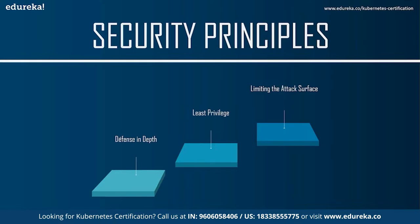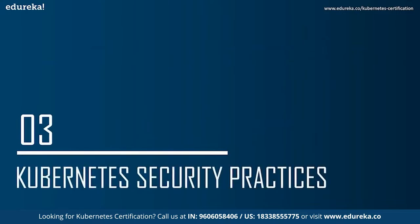The third security principle is limiting the attack surface — the set of all possible ways a system can be attacked. Returning to the castle metaphor: the longer the castle walls, the more archers needed to patrol them; a circular castle is most efficient. In software systems, the fundamental way to reduce the attack surface is to minimize the amount of code, since greater complexity increases the likelihood of latent vulnerabilities even in well-tested code.